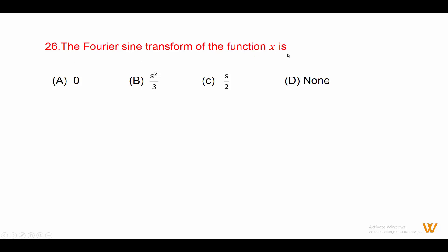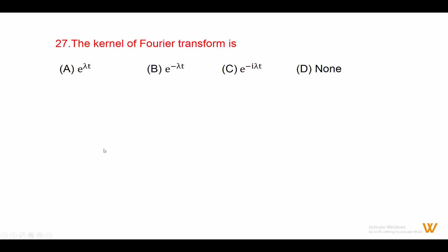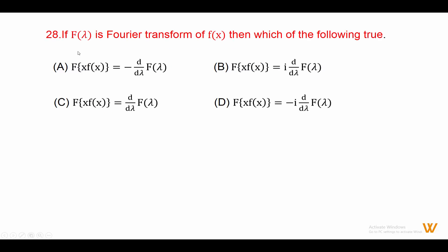Twenty-six: the Fourier sine transform of the function x is Fs of x equals 0. Answer is option A: 0. Twenty-seven: the kernel of the Fourier transform is e raised to minus i lambda t. Answer is option C.